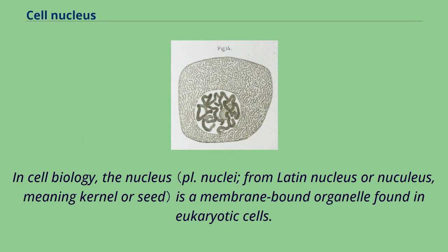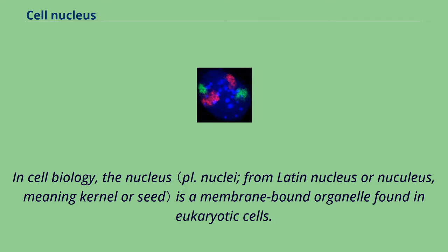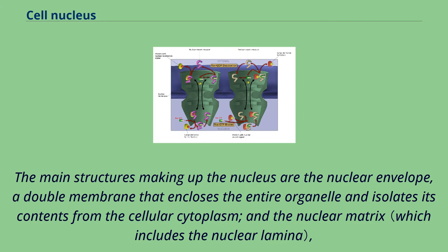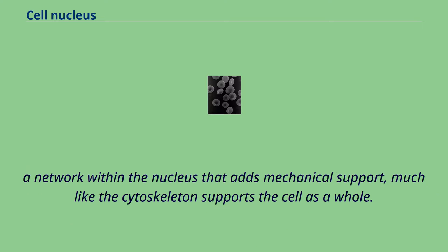In cell biology, the nucleus is a membrane-bound organelle found in eukaryotic cells. Eukaryotes usually have a single nucleus, but a few cell types, such as mammalian red blood cells, have no nuclei, and a few others including osteoclasts have many. The main structures making up the nucleus are the nuclear envelope, a double membrane that encloses the entire organelle and isolates its contents from the cellular cytoplasm, and the nuclear matrix — a network within the nucleus that adds mechanical support, much like the cytoskeleton supports the cell as a whole.